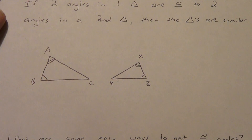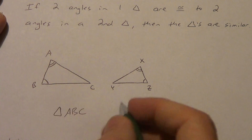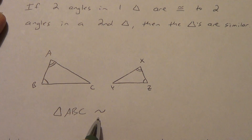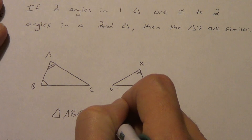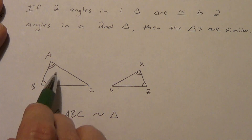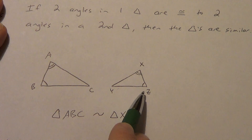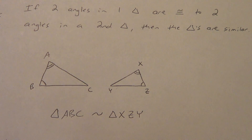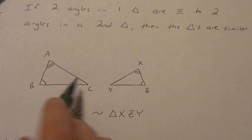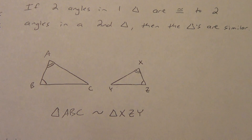So we want to write a similarity statement. Triangle ABC — I can write the first triangle in any order I want, I just went alphabetical. It's similar to... now we have to match the order up correctly. A has two marks, so X — which also has two marks — comes first. B has one mark, so Z comes next, and then Y. If you said XYZ, you'd be wrong. We could also talk about proportional sides: AC matches up with XY, AB matches up with XZ, BC matches up with YZ, and we could set up our proportions and solve.